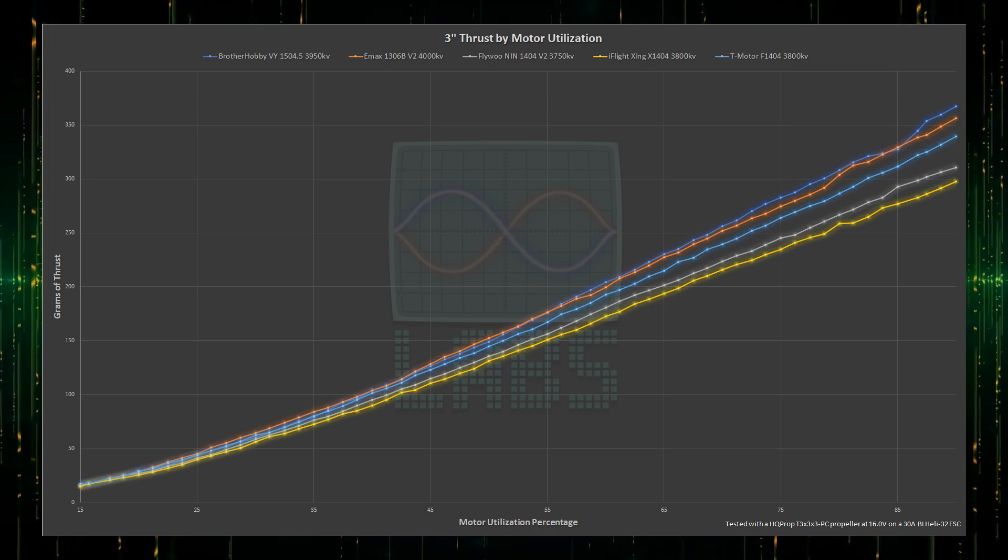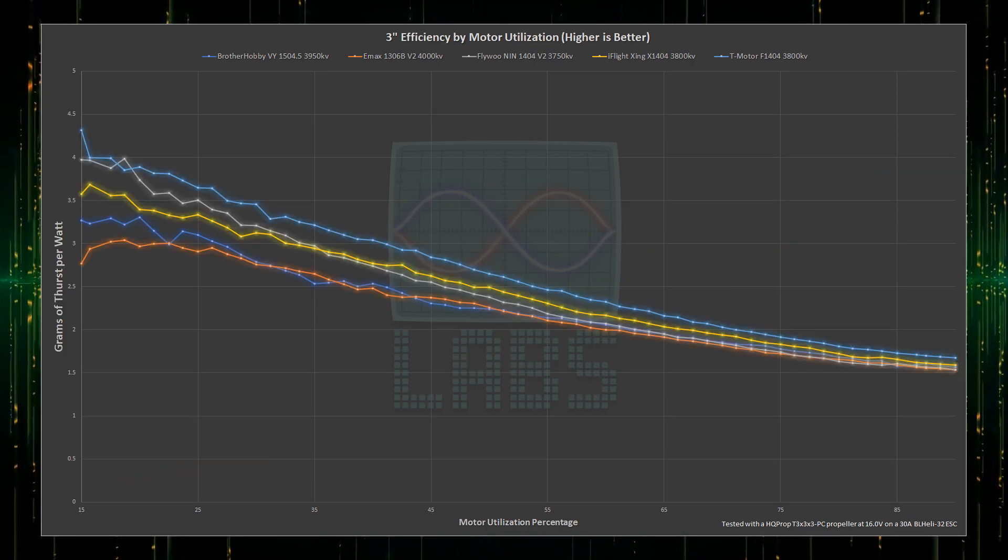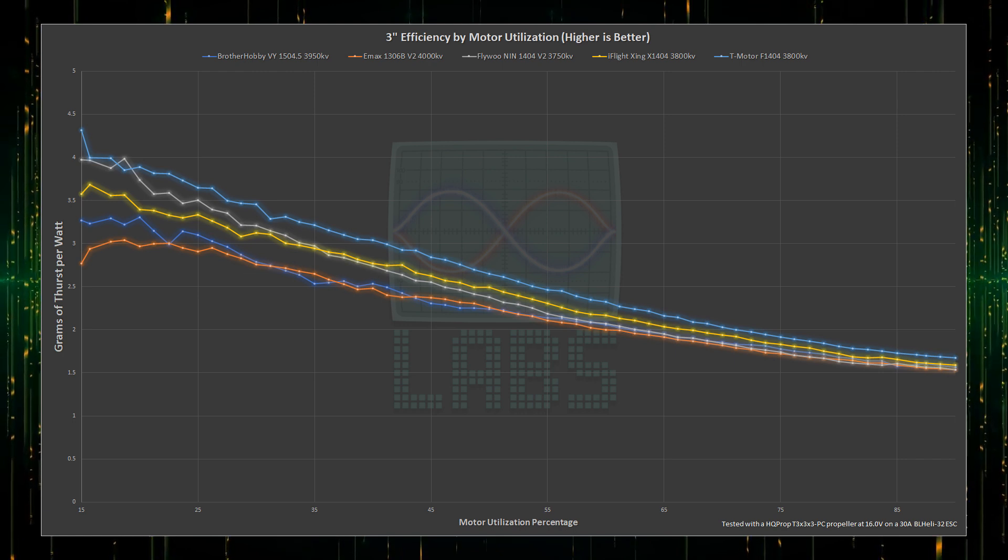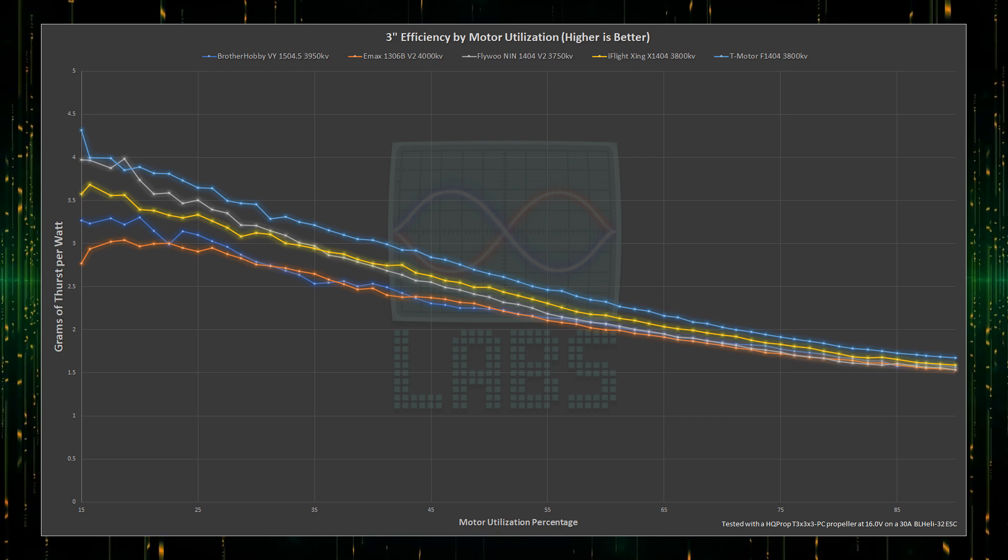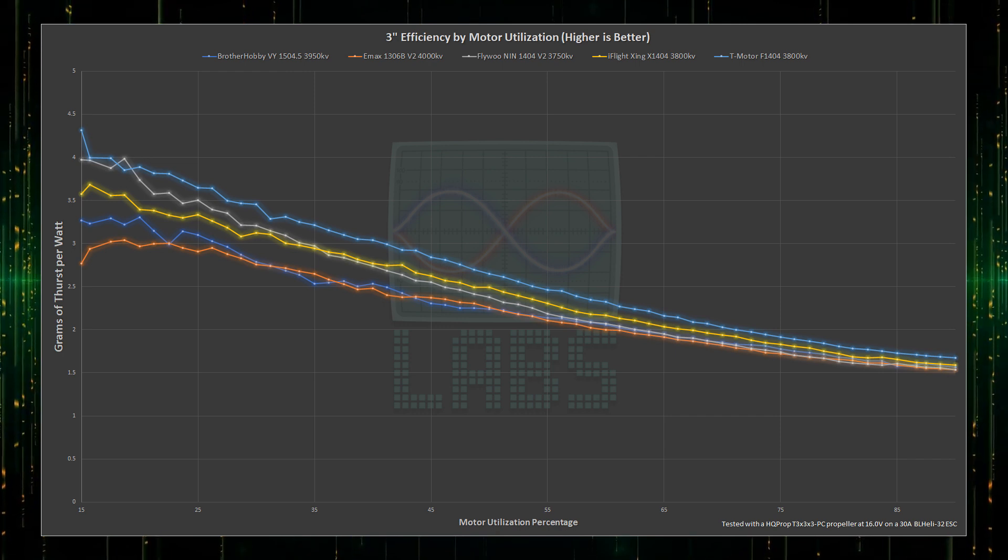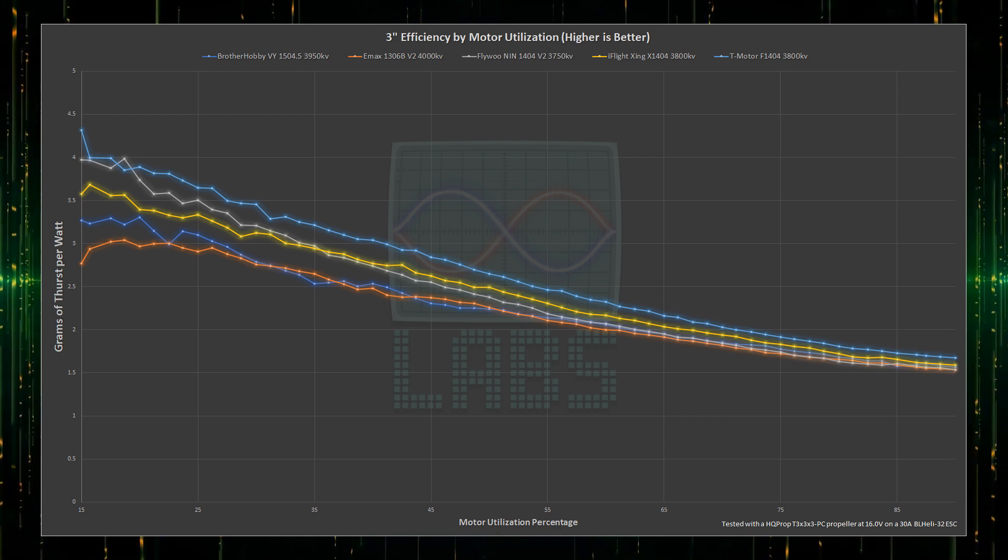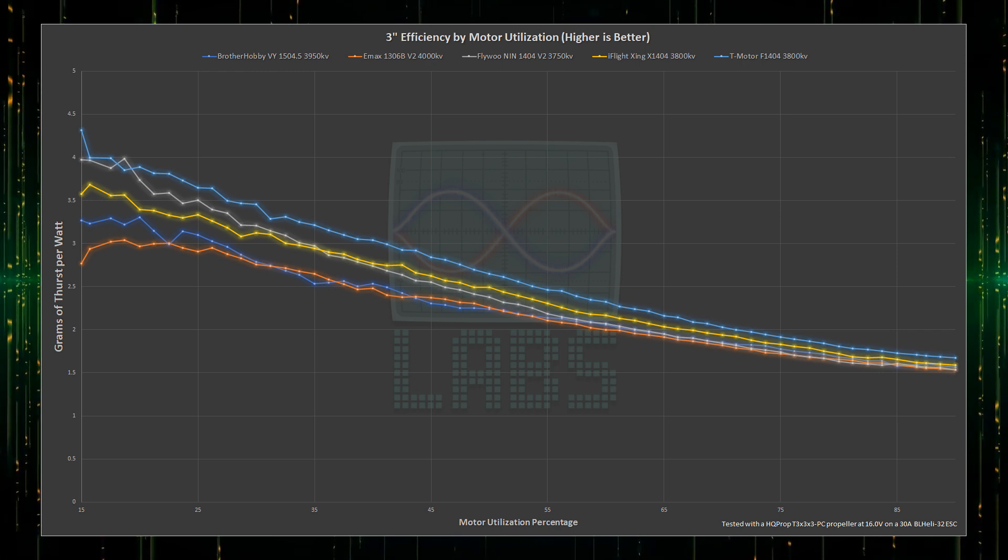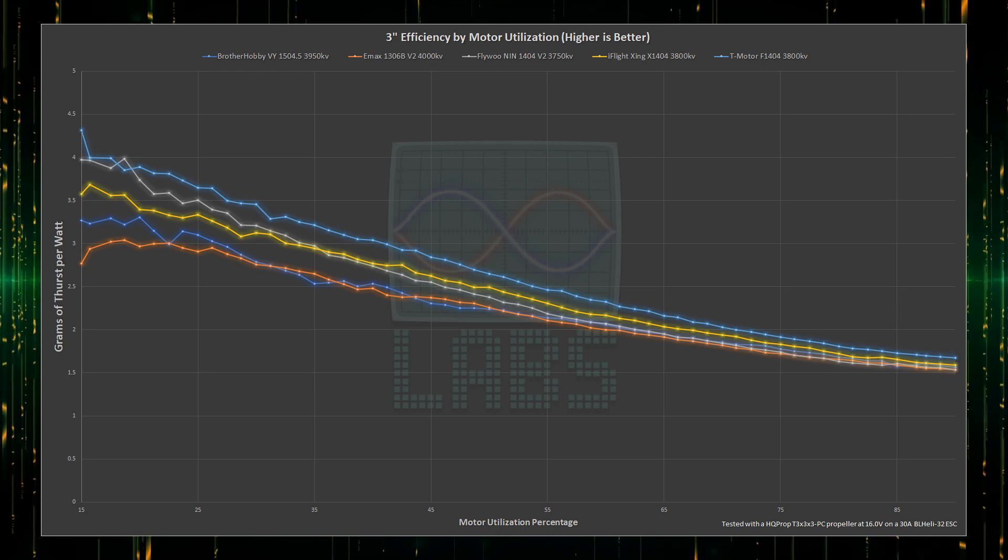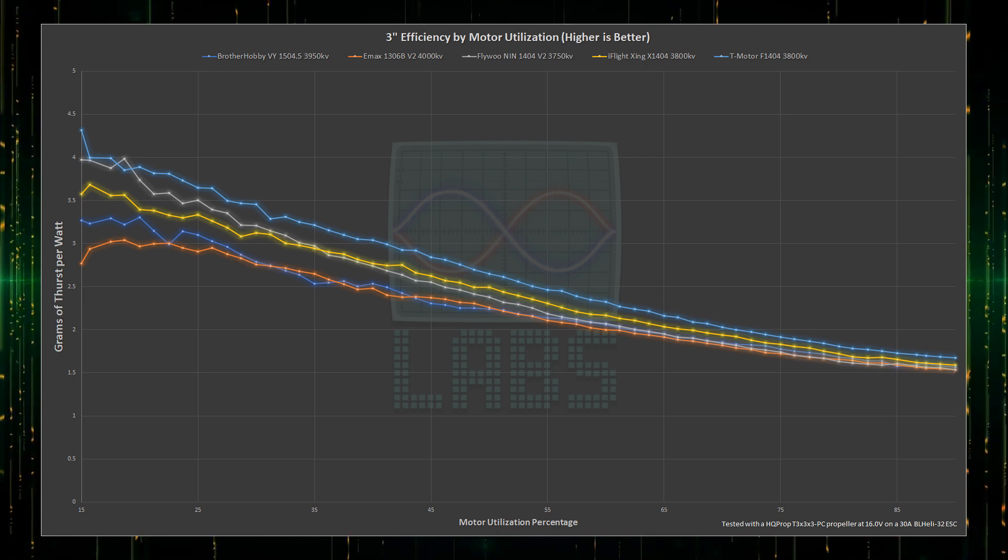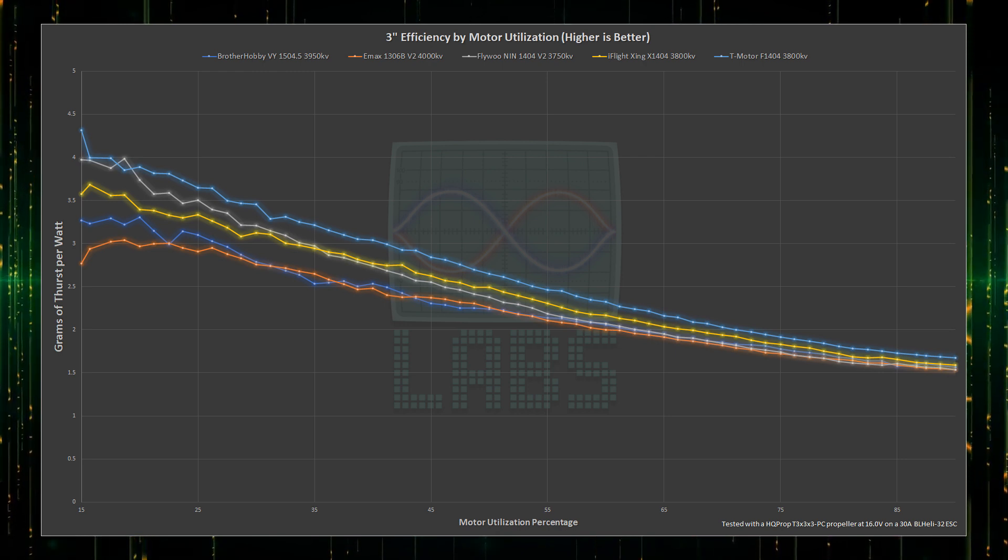Let's look at how efficient that thrust is for the same motor utilization. Wow! The T-Motor clearly stands out as being the most efficient, without exception. The Flywoo starts out near the top and then slowly falls down to the bottom for the remainder of the throttle range. The iFlight motor hangs around the middle for efficiency for the entire throttle range. The Brother Hobby and EMAX motors are hanging out chilling at the bottom for efficiency, mostly equal, with the exception of the Brother Hobby being mostly better for the first 25% of the throttle.